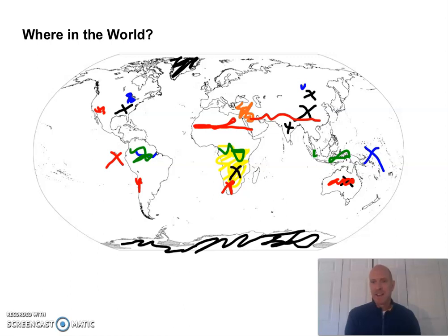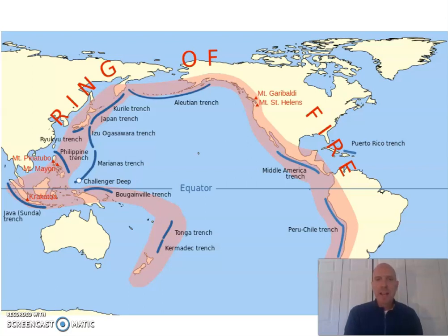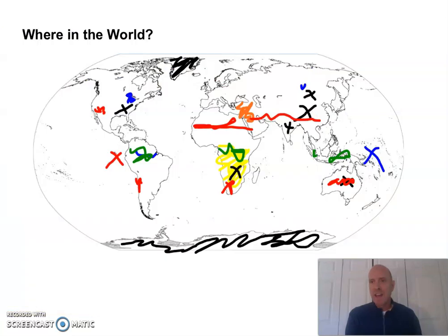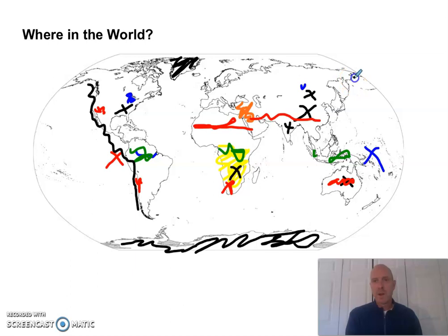Next is the Ring of Fire — earthquakes and volcanoes. From the mining flip lecture, remember why it's in this area: there are plate boundaries there, so you get volcanoes and lots of earthquakes. Mark that in — it goes all the way around through Japan and all those places. That's your Ring of Fire.